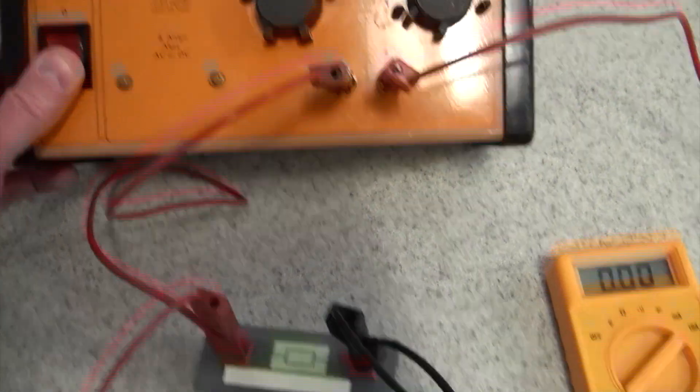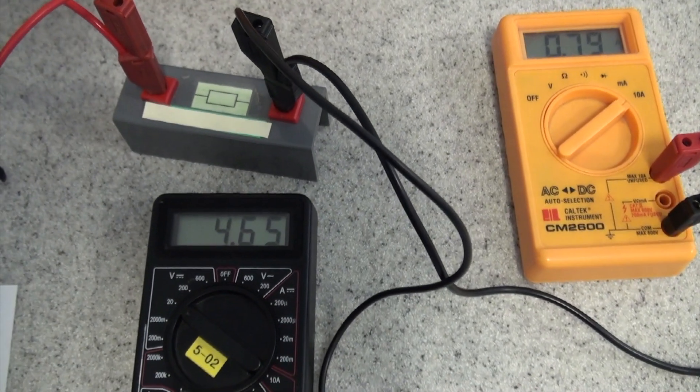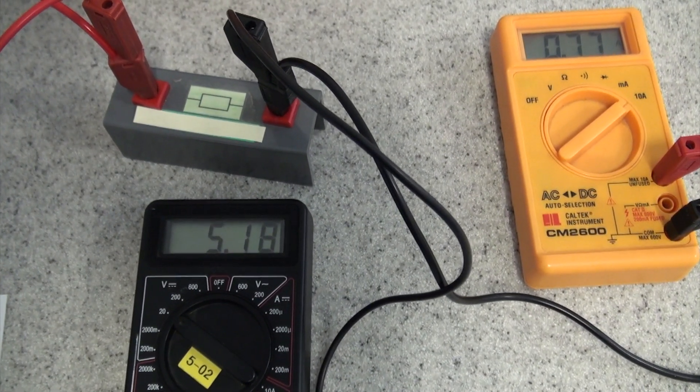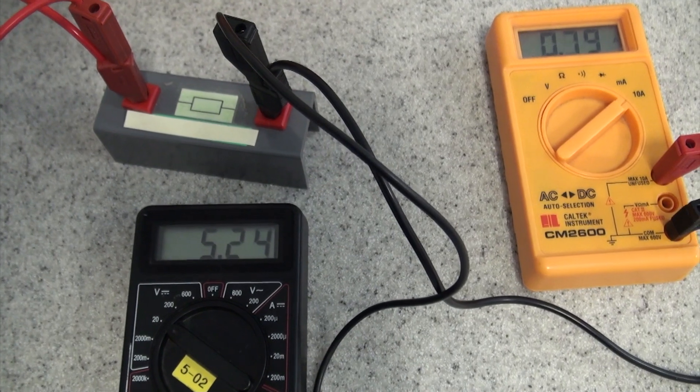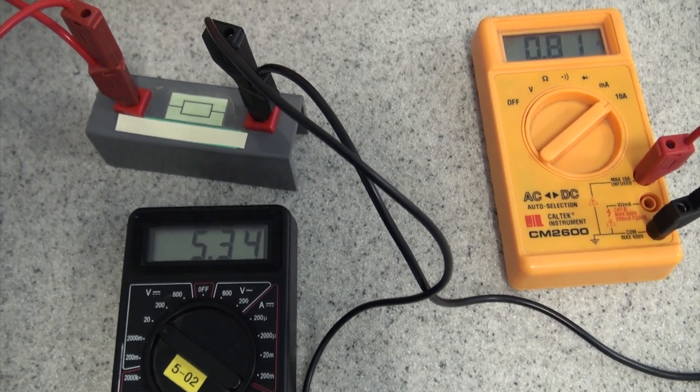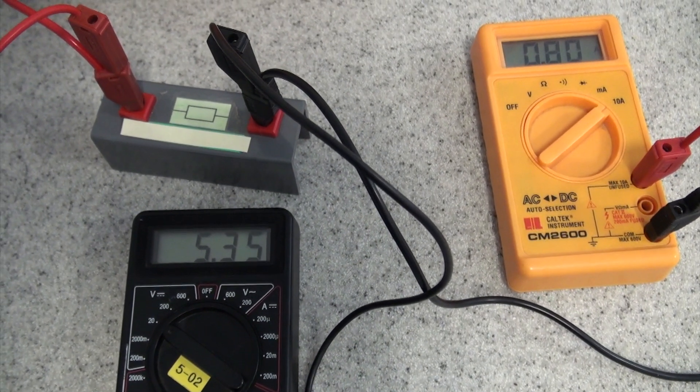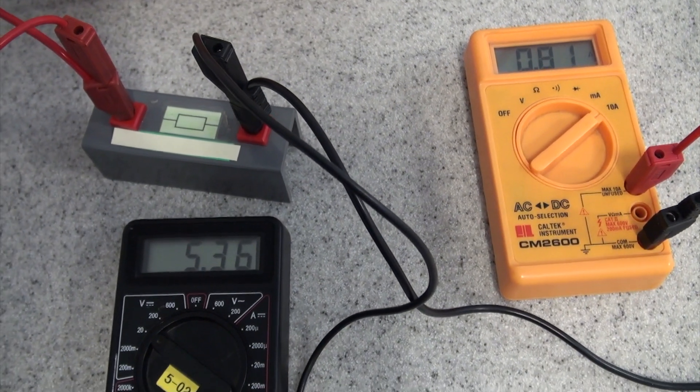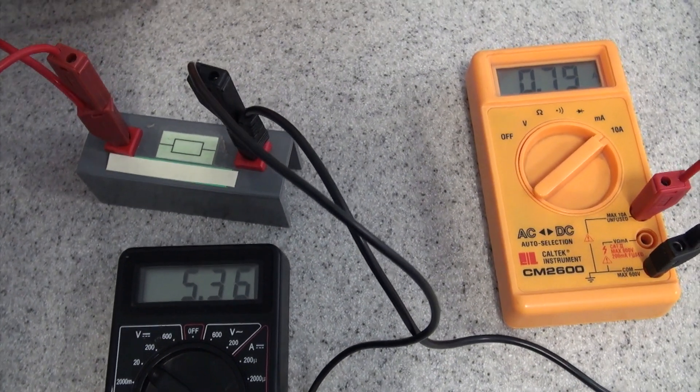So, as we turn the voltage up, the current went up. Let's go again. This is 6 volts on the lab pack. And we get 5.35, 0.78.